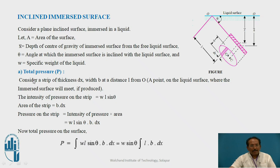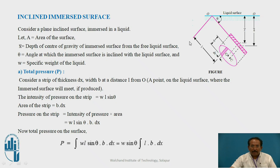Now we will calculate the total pressure. Consider a strip of thickness dx, width b, at a distance l from O — a point on the liquid surface where the immersed surface meets at a right angle. The intensity of pressure on the strip is w·l·sin θ and the area of the strip is b·dx.